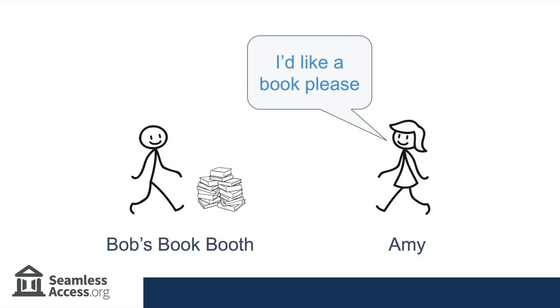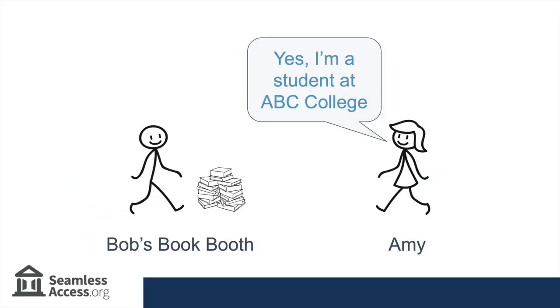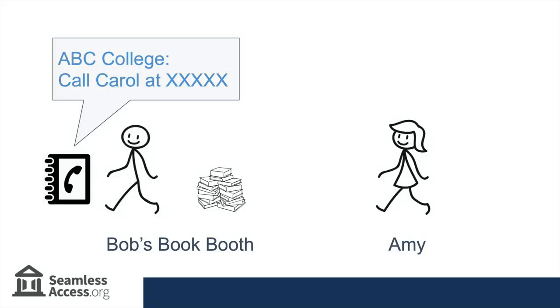Let's start with a simple analogy. Bob runs a conference booth that provides books to anyone who studies at a subscribing institution. Amy comes up to the booth and says, "Hi, can I have a book?" Bob says sure and asks her if she's at a subscribing institution. Amy says that she's a student at ABC College. However, Bob doesn't know Amy, so he needs to verify that she's registered with ABC College.